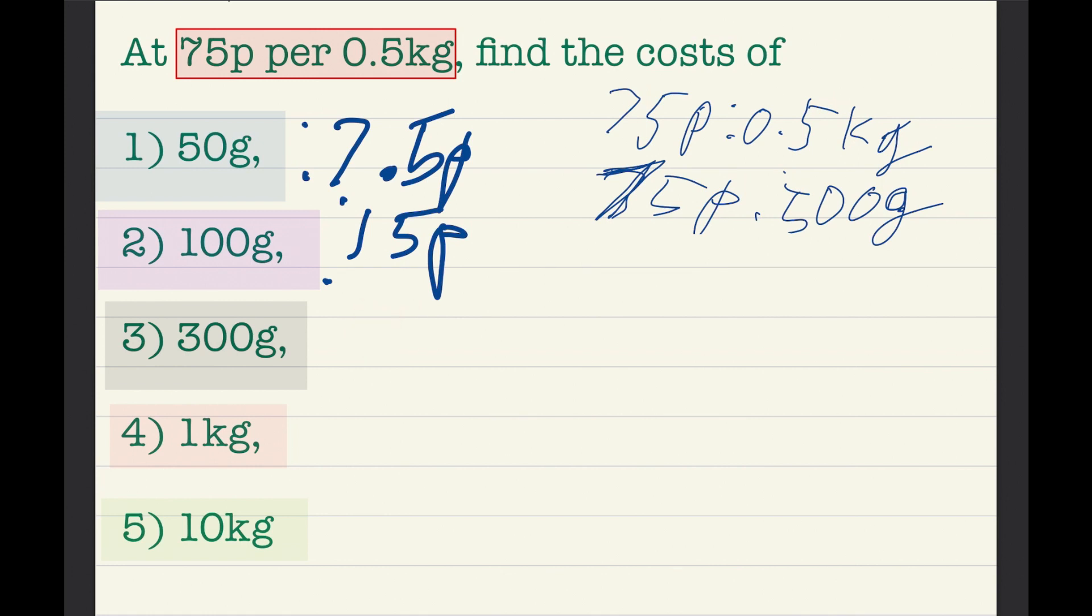Now for 1 kilogram. Since 100g times 10 equals 1,000g, which is 1kg, we do 15p times 10, which equals 150p or £1.50.